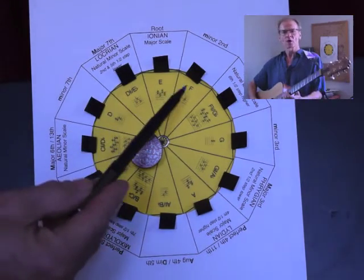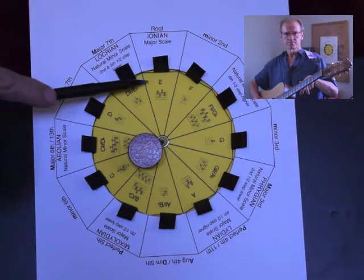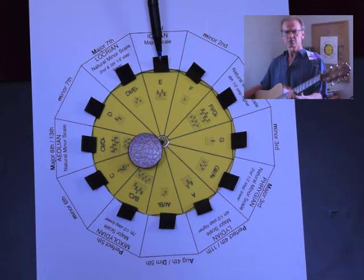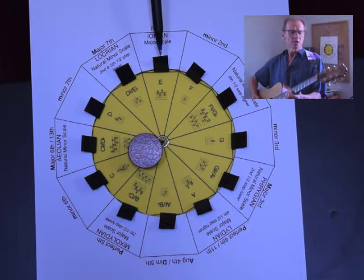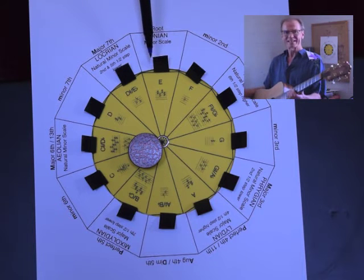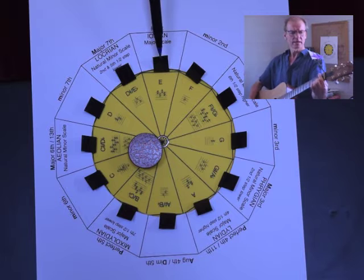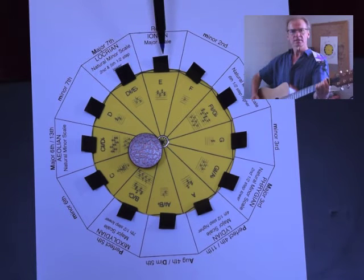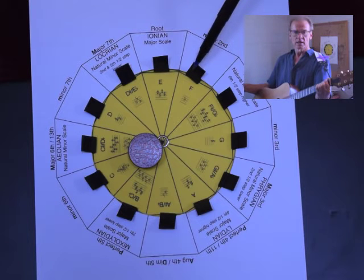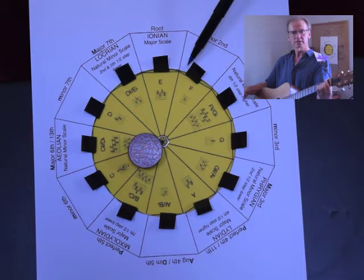For example, on the guitar, the low E string, the heaviest one there, the bottom string, is tuned typically to an E pitch. So that is an E note. The note directly above that, at the first fret, would be an F note on the Sonic Spider-Web. That is in a clockwise orientation away from the E note, as referenced here.